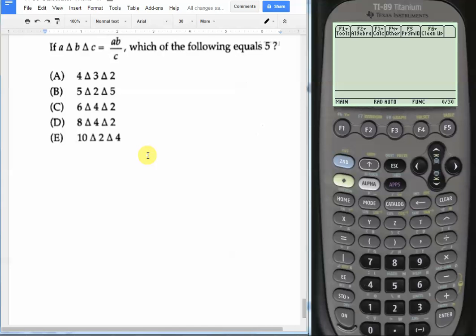In this video we are going to learn how to use defined functions to solve symbol problems. Here the College Board, the SAT, is defining a function with a triangle symbol. They're saying A triangle B triangle C equals AB divided by C, and they ask which of these options gives us an output of 5.